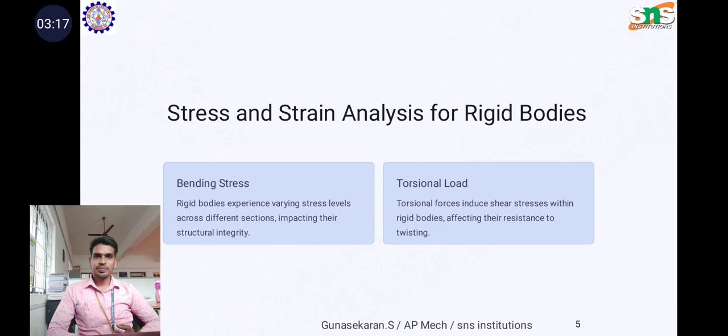Stress and strain analysis for rigid bodies is simplified due to their assumption of inability to deform. In such analysis, stress, the internal forces per unit area, remains constant throughout the body, following straightforward determination of reaction forces and moments. Strain, a measure of deformation, simplifies calculation and enables direct assessment of structural stability.